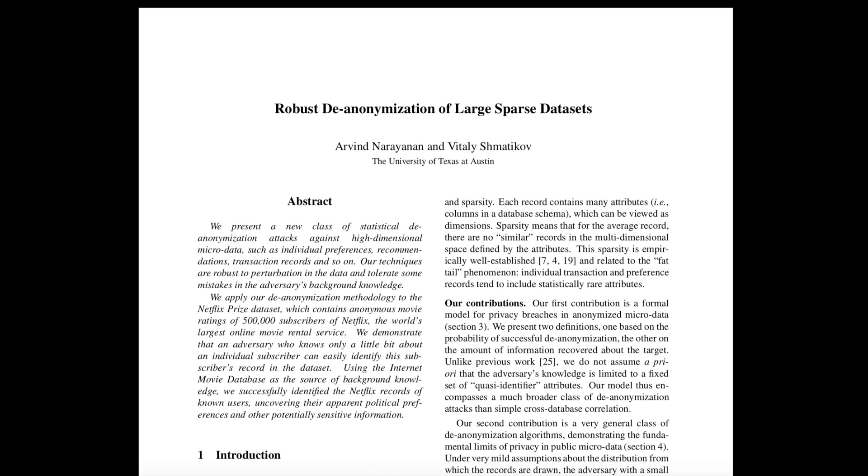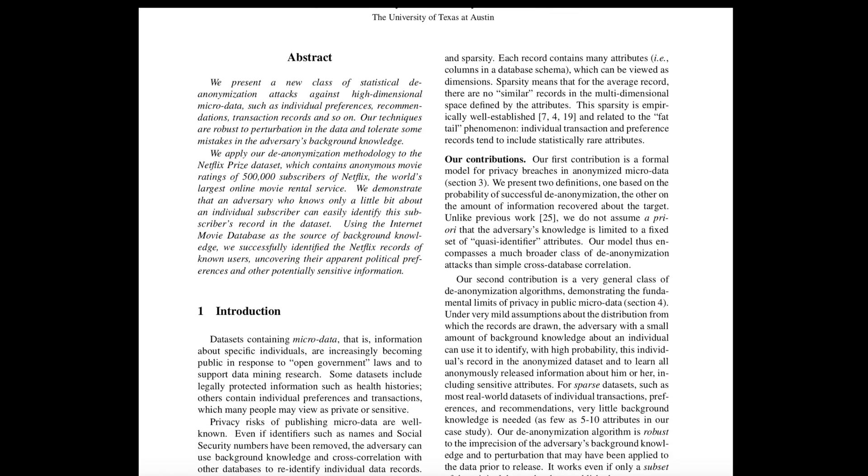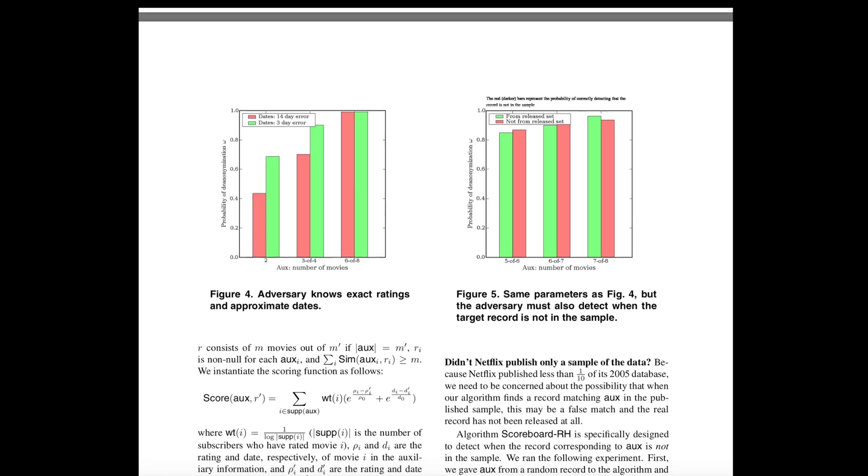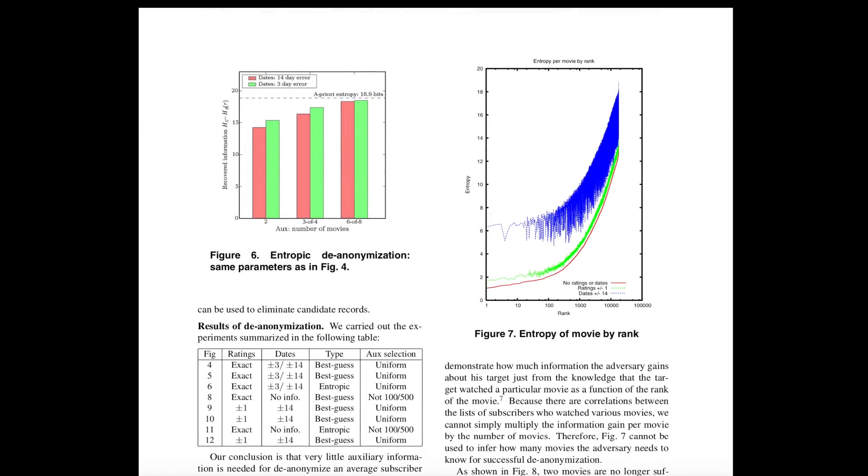But in 2009, two researchers used Internet Movie Database to identify most of the users in the Netflix dataset and disclosed their personal information. This resulted in several lawsuits filed against Netflix because they did not make the information sufficiently anonymous.